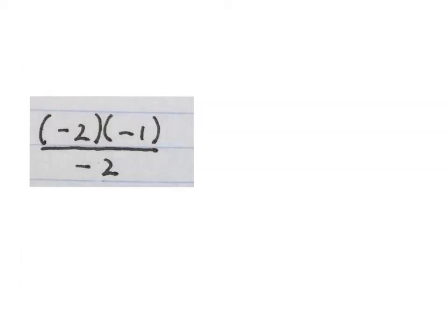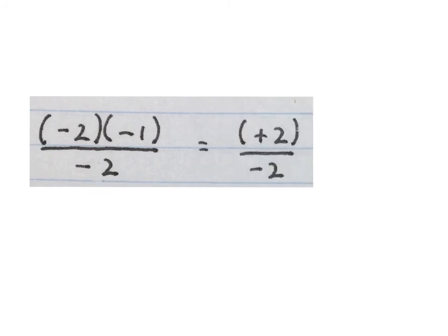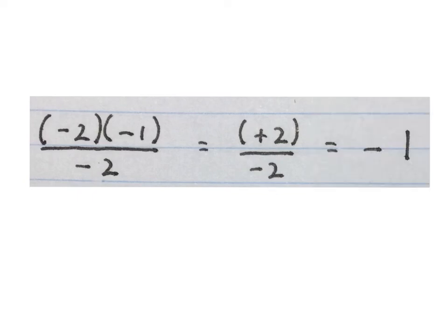Now let's see a few other things you must look out for when you work with integers. When you get a sum like this, you first work out the top, then you work out the bottom, and then you divide them into each other. So minus 2 times minus 1 gives me a positive 2 at the top. Keep the minus 2 at the bottom. Final answer: minus 1.